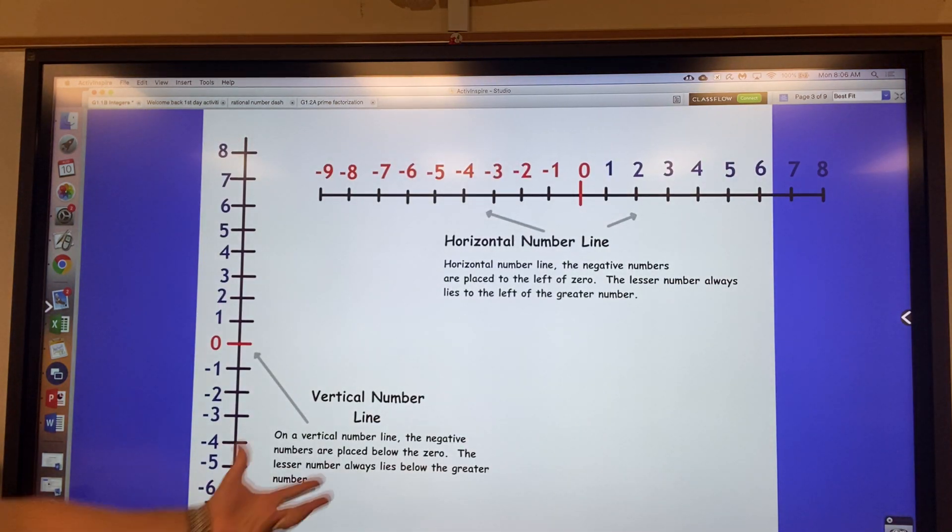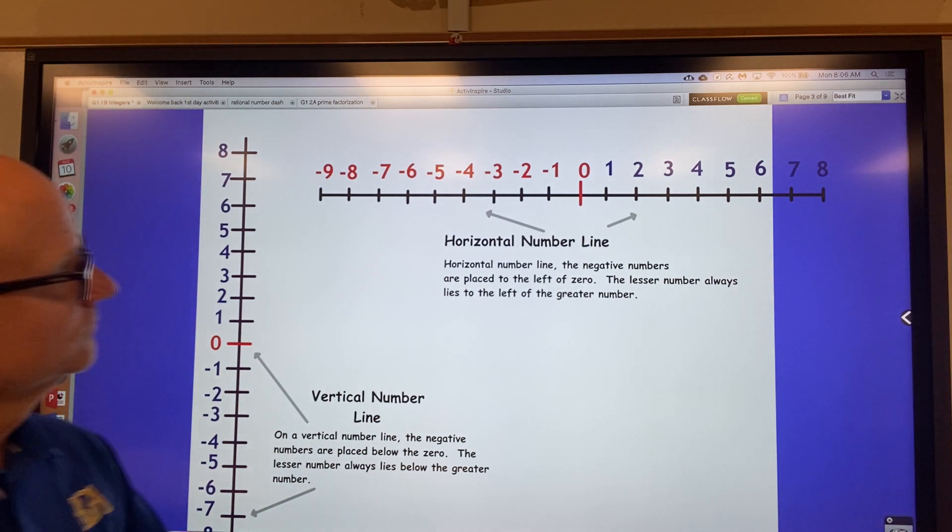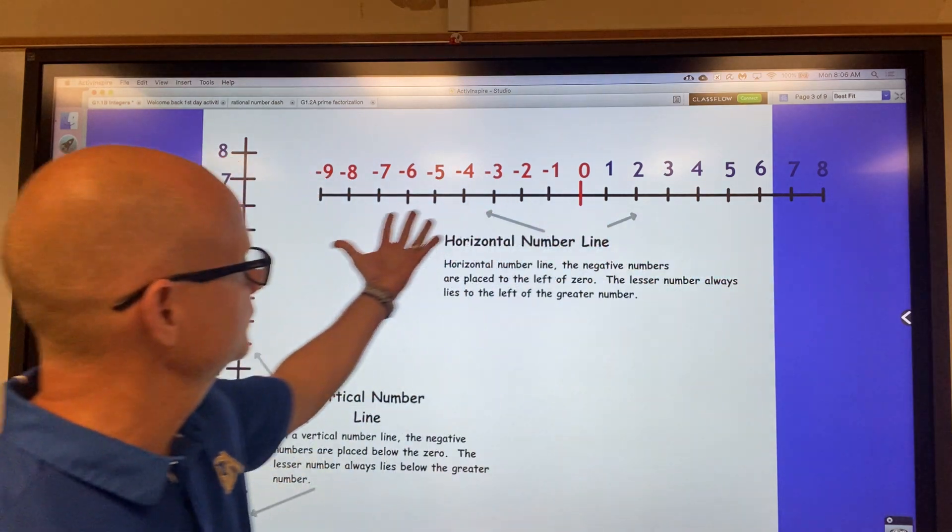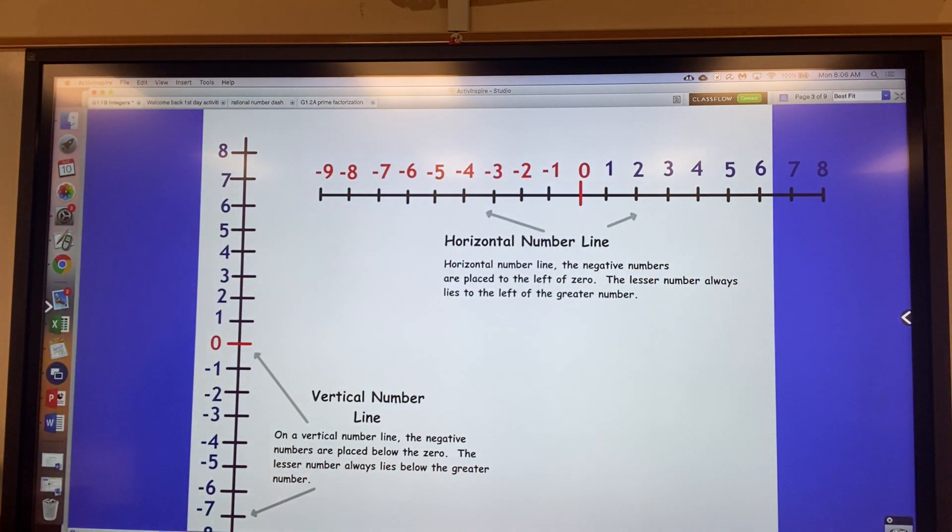So we can have a horizontal number line that shows integers. And when you write a horizontal number line, the positive integers are on the right, the negative integers on the left. You can have a vertical number line to display integers. And when you have that, the positive integers are going up, the negative integers are going down.